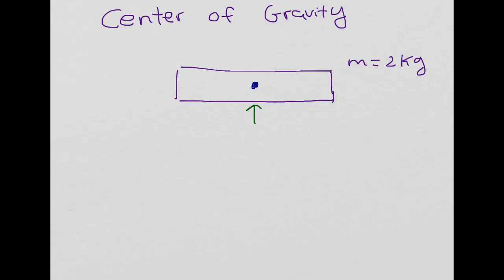Now, interestingly, if you apply a force to the center of gravity, this point right here, the entire ruler will accelerate as if you had applied a force to the whole thing. Let me give you a quick example. Let's say I apply a 10 newton force right where the center of gravity is. I can find the acceleration using Newton's laws. I know that acceleration is equal to force over mass. So this is 10 over 2, which is equal to 5 meters over seconds squared.